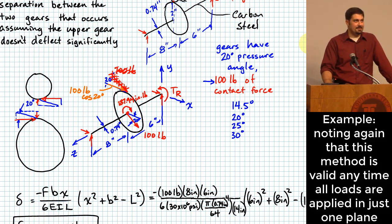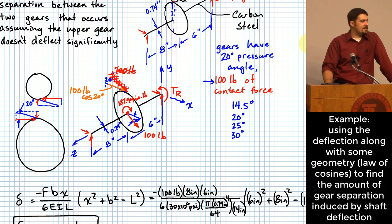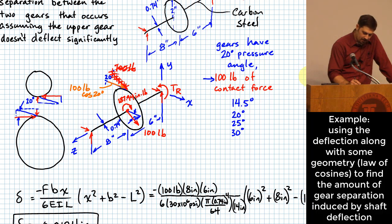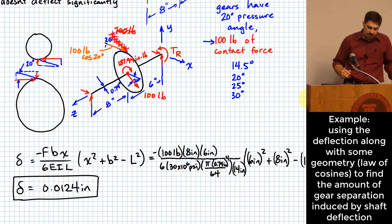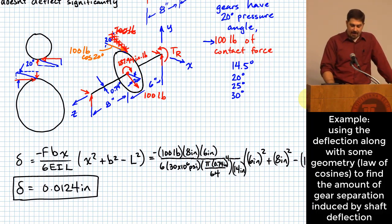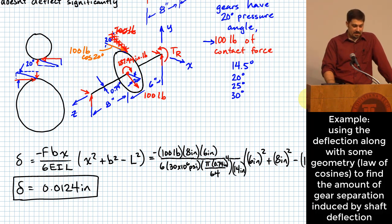Good question: how is that a separation between gears? The value of delta = 0.0124 inches is not the gear separation - that's the next part of the problem. This is how far the center of the lower gear moved in response to the 100-pound force. So the question is: well, how far have the gears actually separated from each other?